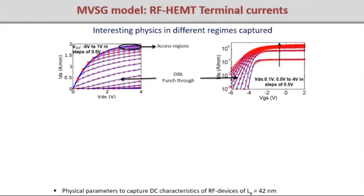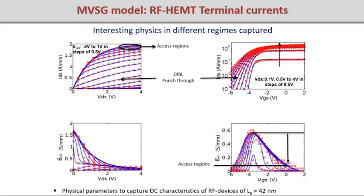The first step in model calibration is against DC terminal characteristics. For an RF device with a 40 nm gate length, the model matches well with measured output and transfer characteristics using physical parameters, capturing short-channel effects like DIBL and punch-through in both the output conductance and sub-threshold region. At higher gate voltages, GM degrades because the access regions limit transport of current — this is captured using the implicit gated transistor approach.